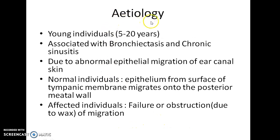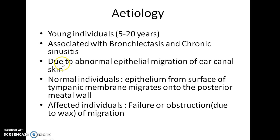Etiology of keratosis obturans: it is seen more commonly in young individuals, between 5 to 20 years of age. It is associated with bronchiectasis and chronic sinusitis. It is caused due to abnormal epithelial migration of the ear canal skin.